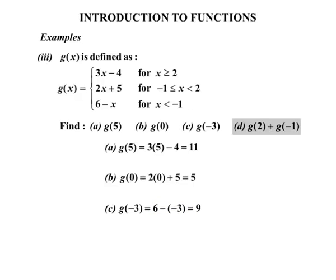Lastly, g of 2 + g of -1. Let's write that down. g of 2 firstly. Now, x has been replaced with 2, so which rule? Well, we're going to use this one because it says x is greater than or equal to 2. Certainly x equals 2. So that's the rule. Using the first rule there, when x is 2, we substitute and we get 3 times 2 - 4 works out to be 2.